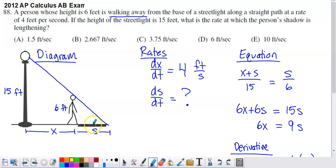So the shadow is obviously this little length along the ground here. So what I decided to do is I decided to call X, the distance between the street light and the person.